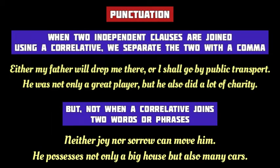Now let's learn the punctuation rule of the Correlative Conjunction. A Correlative Conjunction may join two words, phrases, or two independent clauses in a sentence. When two independent clauses are joined by a Correlative Conjunction, we separate them with a comma. In the first example, 'either/or' is joining two independent clauses, so a comma has been used after the first clause. In the second example, 'not only/but also' also joins two independent clauses, so a comma has been used after the first clause.